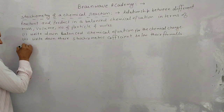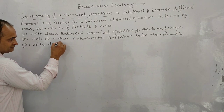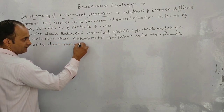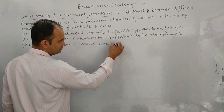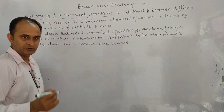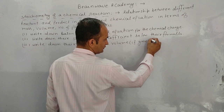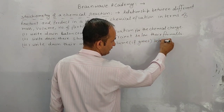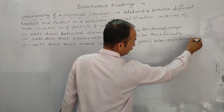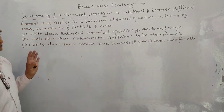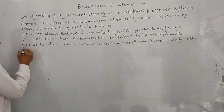Third step: write down their masses and volume — mass if it is a solid, and volume if it is a gas — below their formula. Below the formula of each species, write its mass or volume.